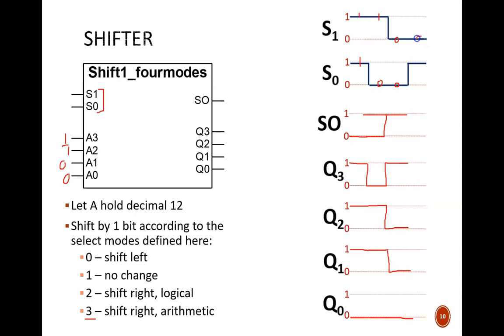The last time slot is in no change mode. So A3 becomes Q3, A2 becomes Q2, and so on.